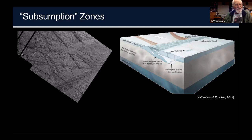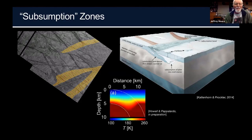Just as you get mountain ranges behind subduction zones on Earth — such as the Cascades — there's an illustration of where those subduction zones are and how the temperature profiles of these features work on Europa.